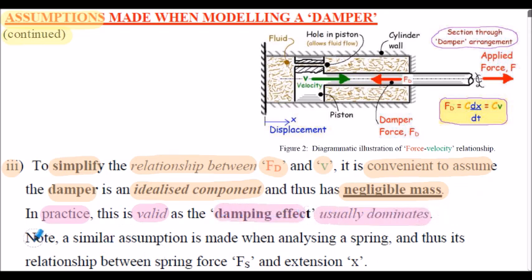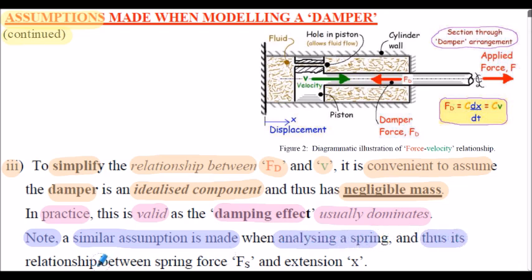Note for reference: a similar assumption is made in our previous presentation when analyzing a spring, when deriving its relationship between spring force Fs and extension X. Assuming the mass of the spring was negligible, we find that force is proportional to extension — known as spring stiffness. There is a separate presentation related to springs and spring stiffness.